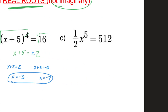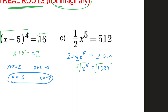Last: one half x to the fifth equals 512. First I need to get rid of the one half, so I'll multiply both sides by 2. That gives me x to the fifth equals 1024. I'll take the fifth root of both sides — fifth root is an odd number, so no plus or minus required. I'll need a calculator for the fifth root of 1024, and the answer is 4, because 4 to the fifth power is 1024.